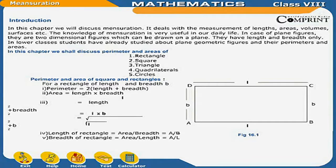In case of plane figures, they are two dimensional figures which can be drawn on a plane. They have length and breadth only. In lower classes students have already studied about plane geometrical figures and their perimeters and areas. In this chapter we shall discuss perimeters and areas of rectangle, square, quadrilaterals, circles, triangles, etc.